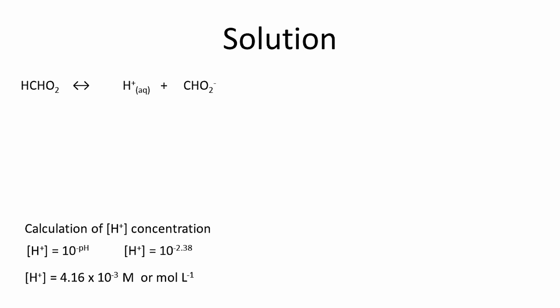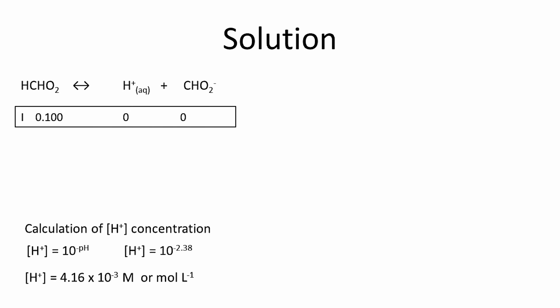Using this information I'm going to set up an ICE table, so that I will have the initial concentration, change in concentration, and equilibrium concentration. The initial concentration of formic acid is 0.100 moles per liter. All concentration terms in this ICE table represent moles per liter.